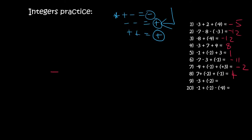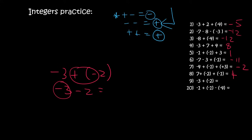Number nine. Let's do the brackets first — a plus and a minus is a minus. So you owe someone three rand, and then you owe another person two rand, so you now owe a total of five rand.